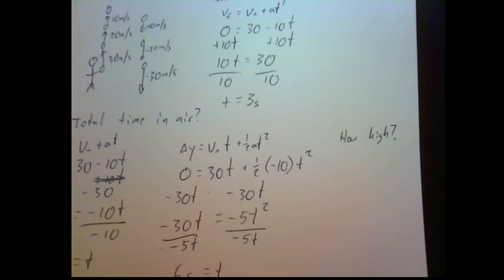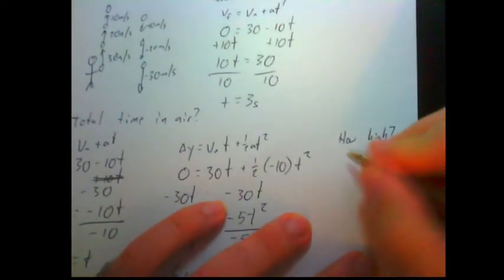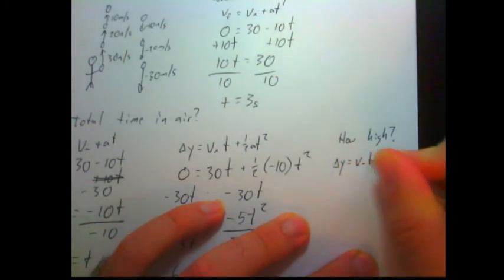We can also do this for how high it goes. Now remember, how high is the one-half at squared formula? And thus far we have been using zero as our initial velocity, but that's not what we're going to do today. Today we have an initial velocity of 30 meters per second, so we need to plug this in. So delta y equals v i t plus one-half at squared.